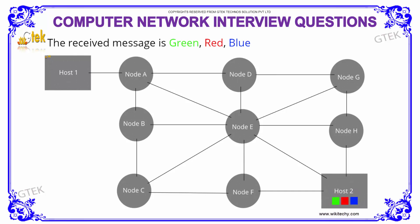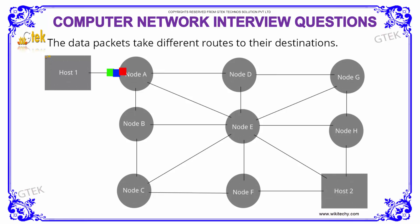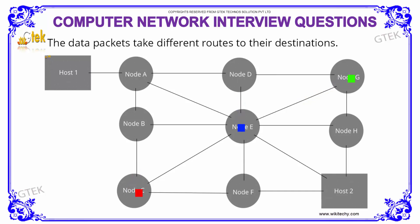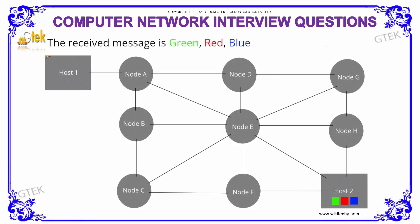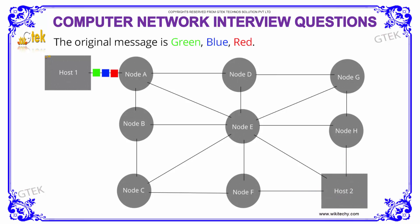Host 1 has a set of data which has to be transferred to host 2. The data can travel along different routes to reach the destination. This is how data is transferred as packets in a network.